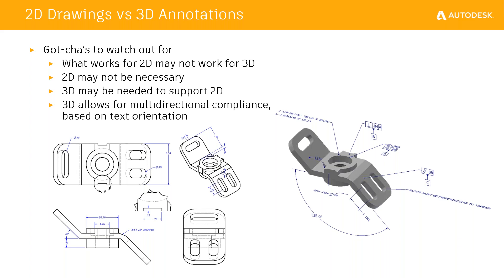There are some things to be aware of — what works in a 2D view may not work in a 3D view. One of the biggest things is clutter. When you're working in a 3D view, if you look at a shaded isometric, everything is spaced out and easy to see. But in a 2D view, you can still get cluttered if you have too many dimensions. The same thing applies to 3D — you have to be very aware of your clutter, spacing, and organization. The software is not going to clean it up for you.